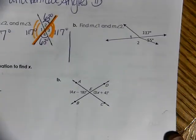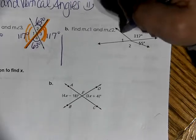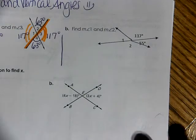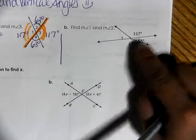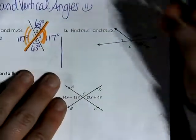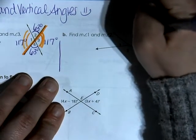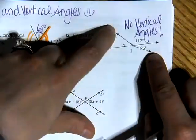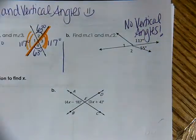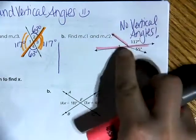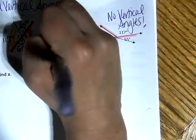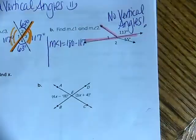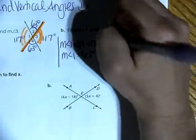Let's look at letter B. Be very careful — these two rays are not forming a line, so we do not have vertical angles here. Angle two and the 117 are not vertical angles, so there are no vertical angles in this picture. Vertical angles only exist where you have two straight lines intersecting each other, and this line is crooked. But what we have instead are two linear pairs. Along this line, angle one and 117 are a linear pair. So the measure of angle one is equal to 180 minus 117, which equals 63 degrees.